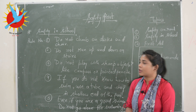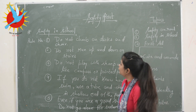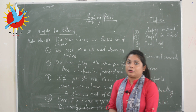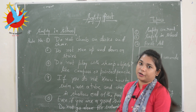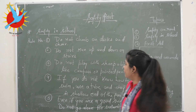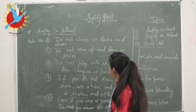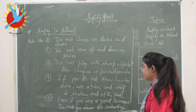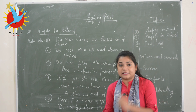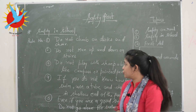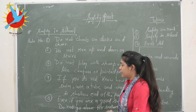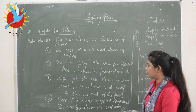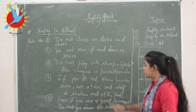Rule number two: do not run up and down on stairs — you might slip and hurt yourself. Rule number three: do not play with sharp objects like a compass, pointed pencils, or a steel scale. You should avoid playing with those things.